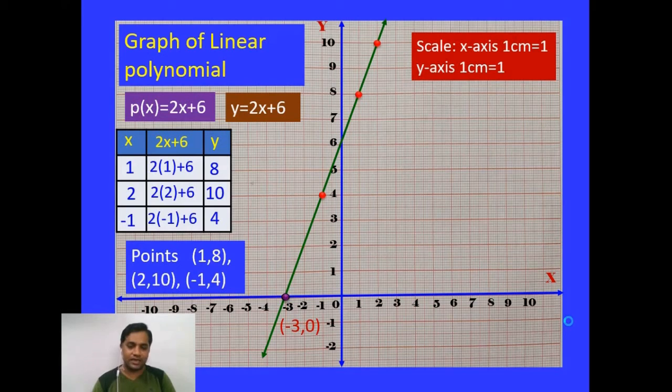Then the x-coordinate of the intersecting point of the line obtained and the x-axis will be the zero of this linear polynomial. If we observe algebraically, let us consider the equation y = 2x + 6 and let us assume it is equal to 0.